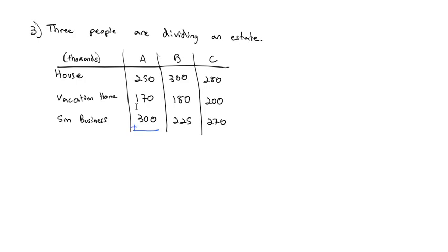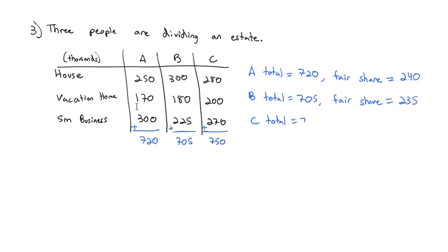First, we're going to total A up. If we total A, it's going to be $720,000. So A's total is $720,000. And if we want A's fair share, we divide that 720 by 3 to get $240,000. If we total B, B's total equals $705,000. So to get B's fair share, we'll do 705 divided by 3, which is $235,000. And for C's total, if we add them up, we get $750,000. So C's total value is $750,000. Divide by 3 to get C's fair share at $250,000.